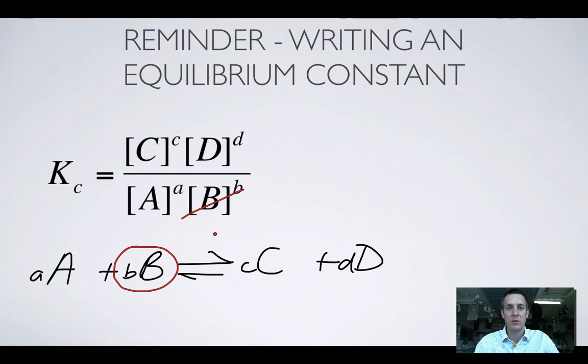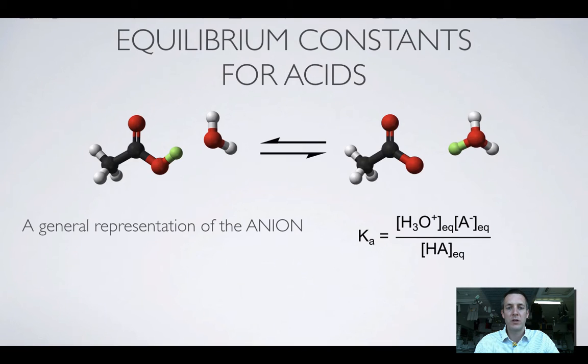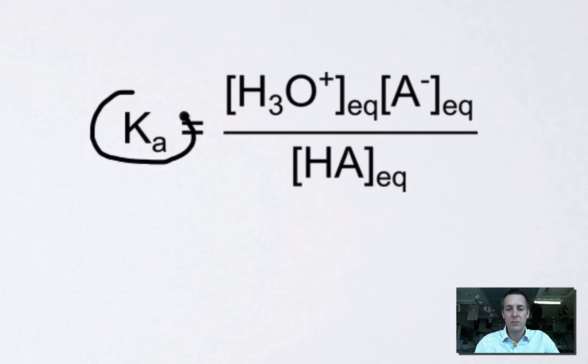So there's a quick reminder of equilibrium constants. Now let's have a look at what these things look like in the context of acids. So one of the first things you might notice is that now that we're talking about an acid equilibrium constant, or an acid dissociation constant, we call it Ka, and that's just because it's an equilibrium constant that's talking about an acid.